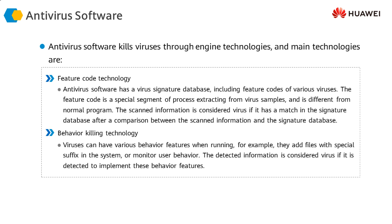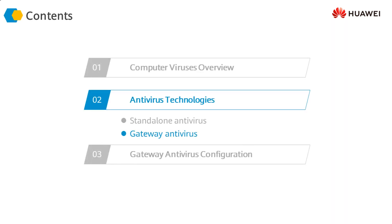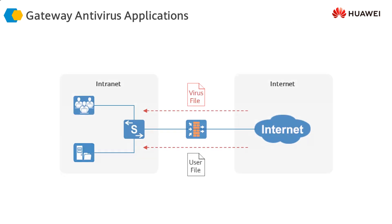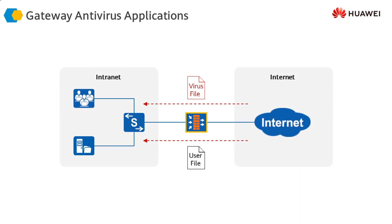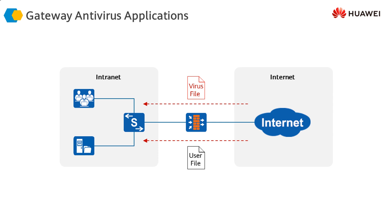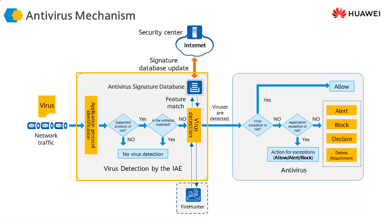Gateway antivirus technologies run mainly on gateway devices, typically firewalls. We will look at this from a Huawei USG firewall point of view. The firewall is responsible for detecting and removing viruses as they try to enter our network. As viruses coming from the internet pass through the firewall, the firewall detects and blocks those viruses from entering our infrastructure. This is done using the Intelligence Awareness Engine (IAE) on our firewall.